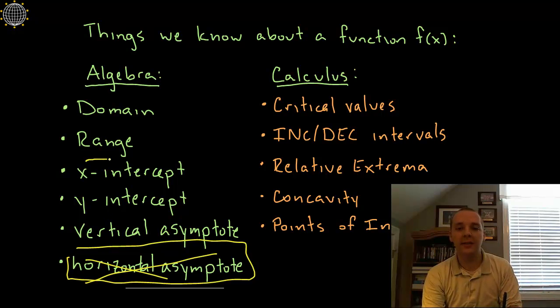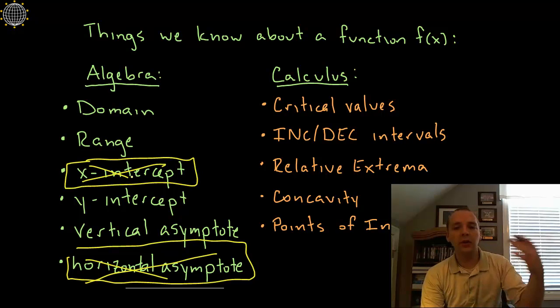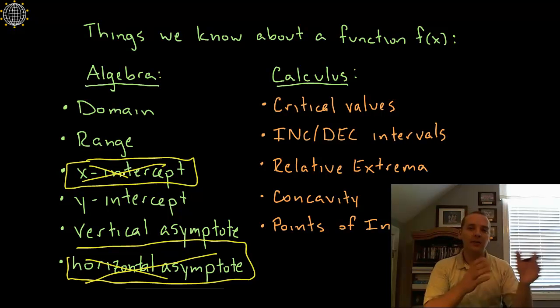Not every function has an x intercept. If it doesn't that's fine, you only apply the things that you can actually find or are reasonable to find. Sometimes if you're finding an x intercept and you set the function equal to zero, if it's a terrible function that might be extremely difficult to solve if it's set equal to zero. So we only do as much as we can do.